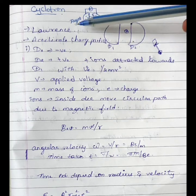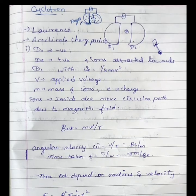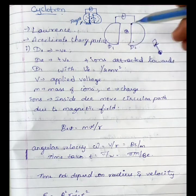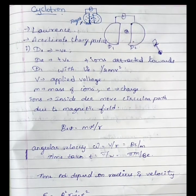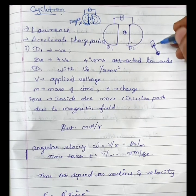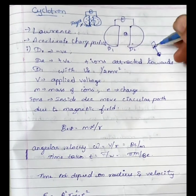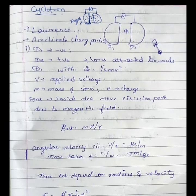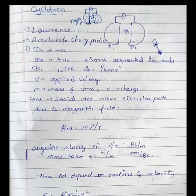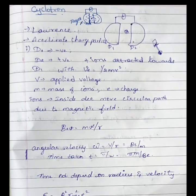The cyclotron was used by Lawrence. It is used to accelerate the charged particles. If you accelerate the charged particles and hit the target materials, the charged particles will move at higher speed. You will use the cyclotron to do this.